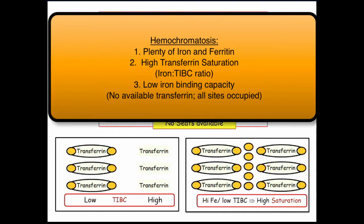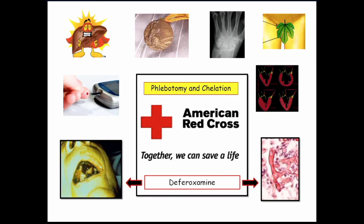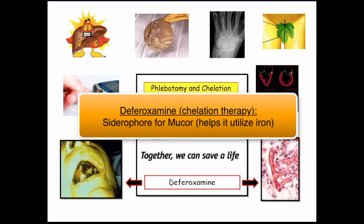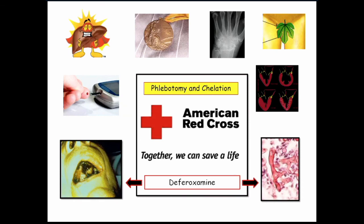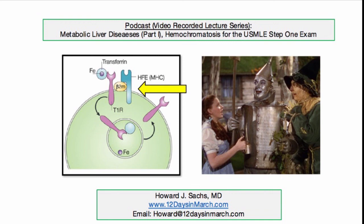People with hemochromatosis: high iron, high transferrin saturation, low binding capacity, high ferritin. Treatment is to phlebotomize these patients. For iron overload you can use chelation with deferoxamine — you'll more likely hear about deferoxamine with other iron overload states like thalassemia. Note that mucormycosis is associated with deferoxamine use, as mucor uses deferoxamine as a siderophore, making it grow and proliferate. You can also give hepcidin infusions to stop iron movement, but it's far more expensive than phlebotomy. That concludes this discussion of hemochromatosis for the USMLE Step 1 exam.